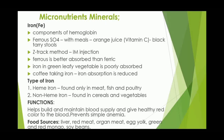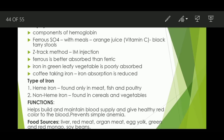Micronutrient minerals. Iron is a component of hemoglobin. Ferrous sulfate with orange juice produces black stools. The Z-track method is used for intramuscular injection. Ferrous iron is better absorbed than ferric. Iron in green leafy vegetables is poorly absorbed; coffee reduces iron absorption. Types: heme iron found only in meat, fish, and poultry; non-heme iron found in cereals and vegetables. Functions: helps build and maintain blood supply, gives healthy red blood color, and prevents simple anemia. Food sources: liver, red meat, organ meat, egg yolk, green and red mongo, and soybean.